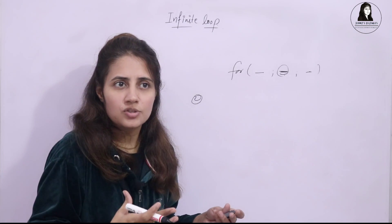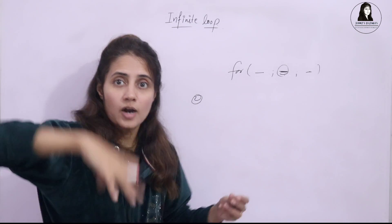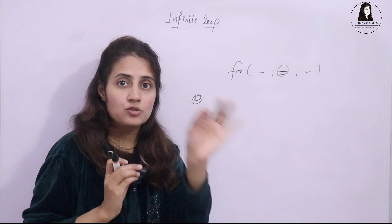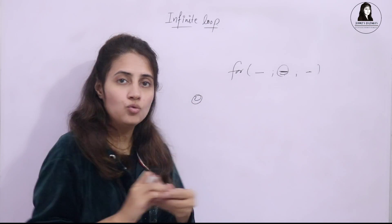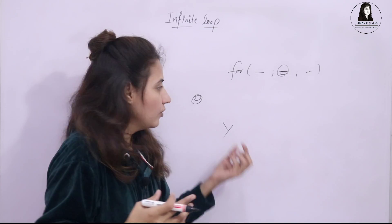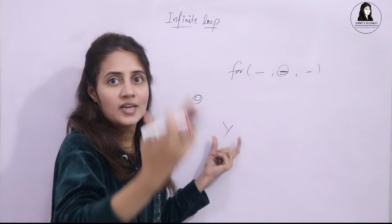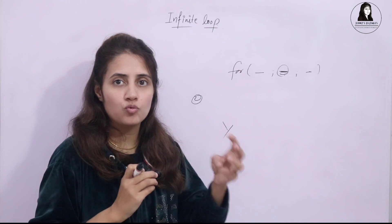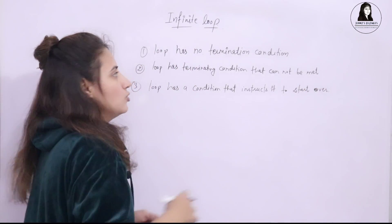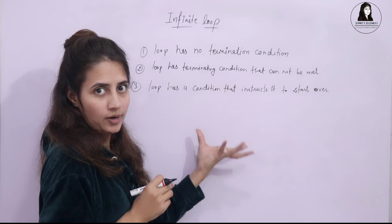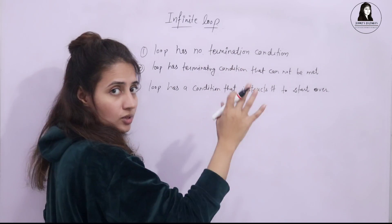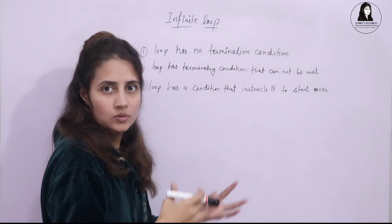Third, if in your loop there is a condition that instructs it to start over again. Like sometimes in a while loop we use: press Y to continue, press N to exit. So if you enter Y every time, it is going to continue. So in these three situations a loop would be an infinite loop: either there is no termination condition, or the loop has a termination condition that cannot be met, or the loop has a condition that instructs it to start over.